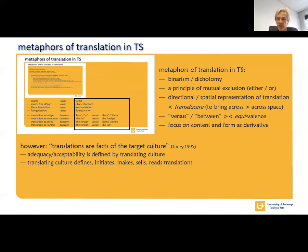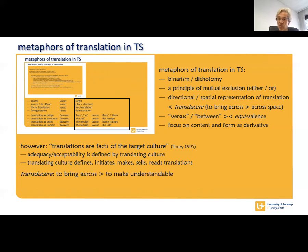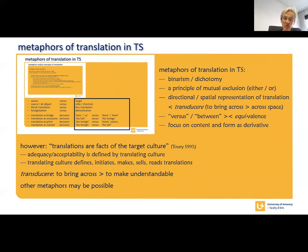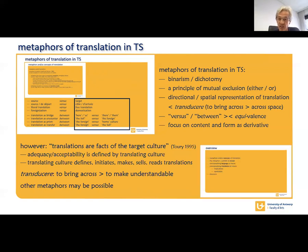Translations happen in a single culture, which is the translating culture. It is there that translations are initiated, made, sold, and read. So why do we emphasize dichotomy and directionality, starting from the translated culture, which actually remains passive and undergoes translation? Put otherwise, transducere — to bring across — does not have to be across space. The expression also has an epistemological meaning, which is to bring something across, to make it understandable, and this is something that happens inside the translating culture. Other metaphors may be possible and might avoid such dichotomy and directional thinking, and mosaic may well be one of these.